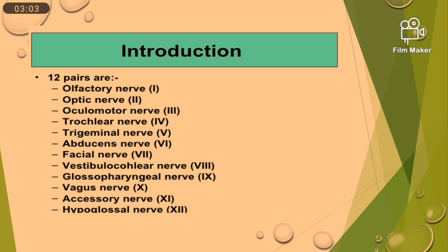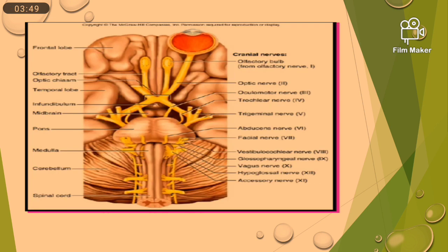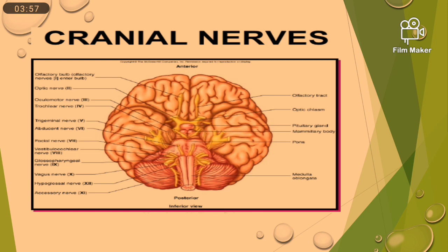Cranial nerves divide into 3 types: sensory nerve, motor nerve, and mixed nerve. The 12 pairs are: olfactory nerve, optic nerve, oculomotor nerve, trochlear nerve, trigeminal nerve, abducens nerve, facial nerve, vestibulocochlear or auditory nerve, glossopharyngeal nerve, vagus nerve, accessory nerve, and hypoglossal nerve. This is the order from anterior to posterior. You can see from anterior to posterior these cranial nerves are situated, and according to that, nomenclature and numbers have been classified.